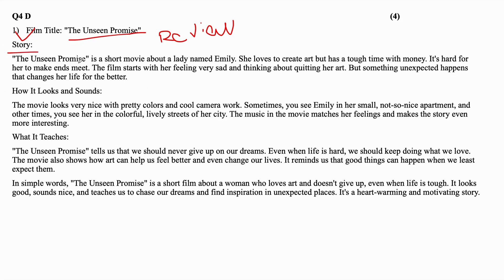The Unseen Promise is a short movie about a lady named Emily. She loves to create art but has a tough time with money — it's hard for her to make ends meet, meaning she has a shortage of money according to her expenses. The film starts with her feeling very sad and thinking about quitting her art, but something unexpected happens that changes her life for the better.